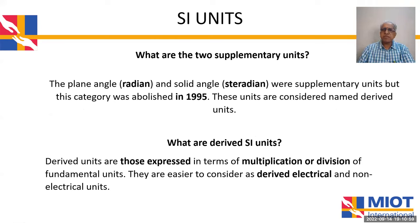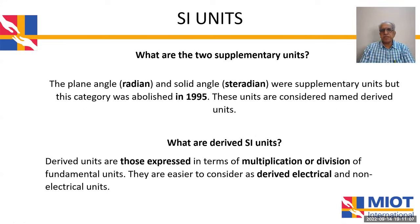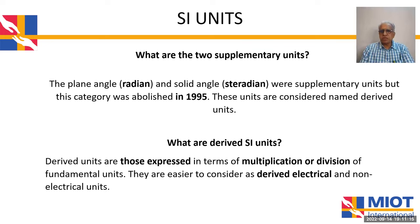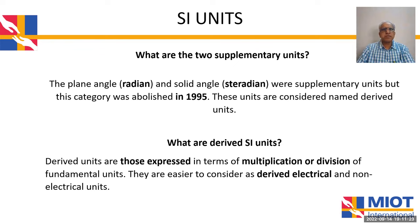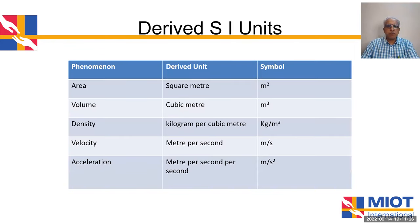There are two supplementary SI units which were removed in 1995: plane angle called the radian and solid angle called the steradian. Derived SI units are expressed either in multiplication or division of the fundamental units. Derived units can be considered as derived electrical and derived non-electrical units. The derived SI units of importance include area, volume, density, velocity, and acceleration.